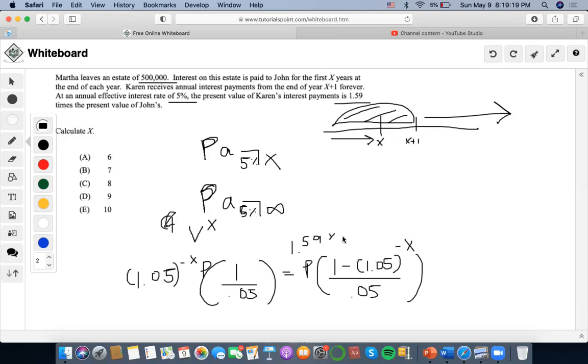So yeah, now we can get rid of the P's, we can also get rid of the 0.05's, and I think what we could do is that we could bring this over to the other side.